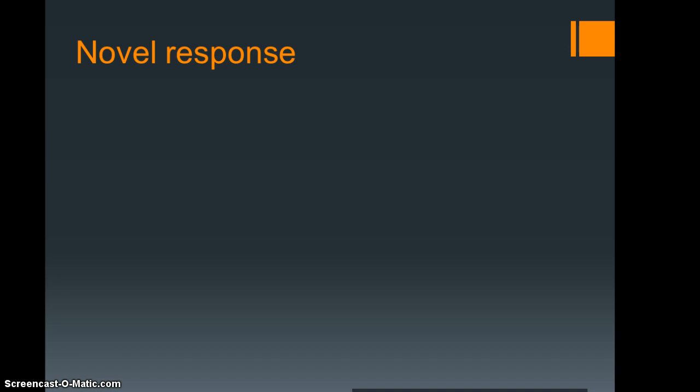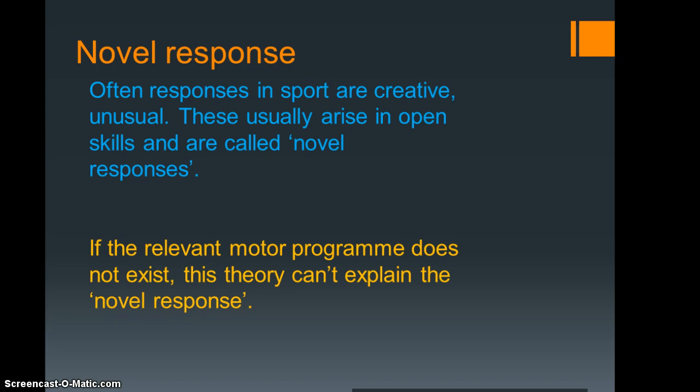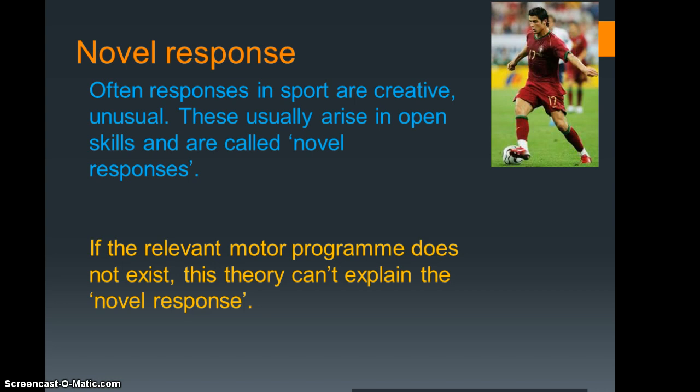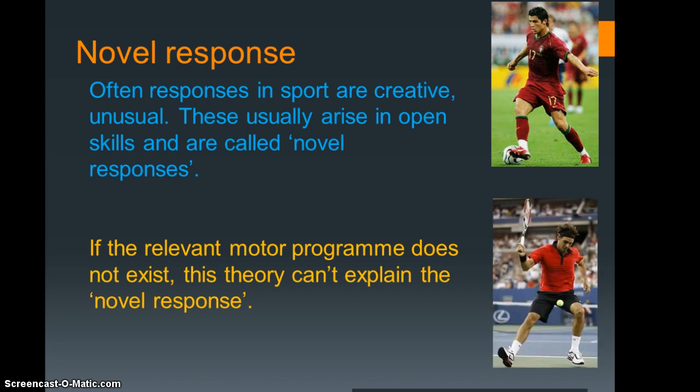Lastly is the perception of novel response. If we're supposed to have a memory trace for every single action we've carried out, how can you explain this idea of a novel response—when someone does something that's never been done before? Think of the first time anyone saw someone do a step over. Where did they actually get that information from? Or somebody hit the ball through their legs in tennis. What made them think of how to do that? In that sense there is a drawback to this actual model.